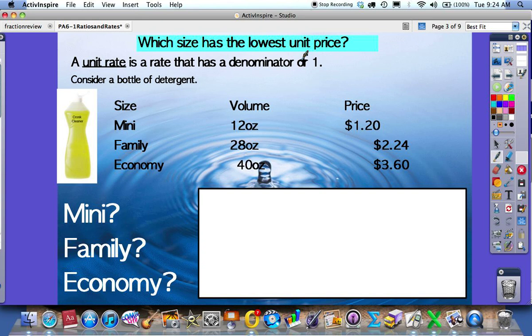For example, if I was going to go to the store and buy detergent, I know that the mini detergent is 12 ounces for $1.20, the family detergent is 28 ounces for $2.24, but the economy is 40 ounces for $3.60. Which one is the better deal? What we're going to do is instead of finding how much it is for 12 ounces, 28 ounces, or 40 ounces, we're going to see how much it is for 1 ounce.